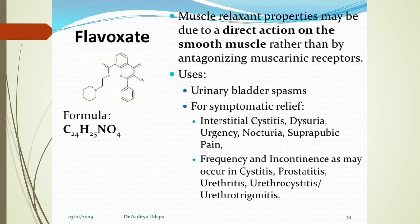Flavoxate has muscle relaxation properties, possibly due to direct action on smooth muscle rather than muscarinic receptor antagonism. Uses of flavoxate include urinary bladder spasm, symptomatic relief in interstitial cystitis, dysuria, urgency, nocturnal pain, and suprapubic pain.